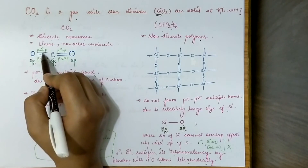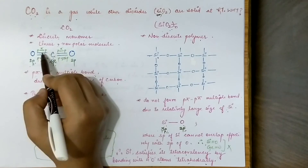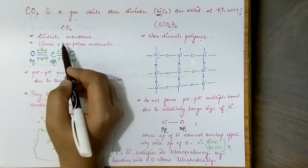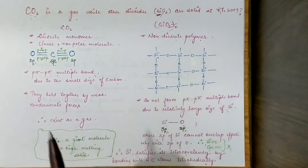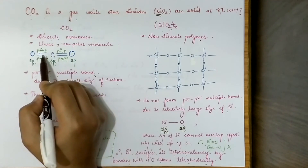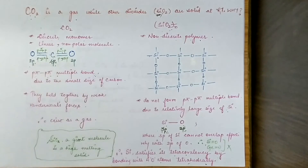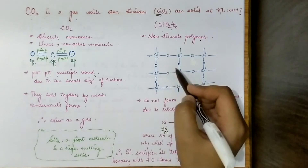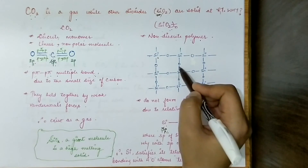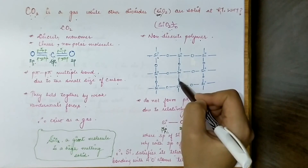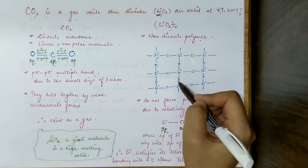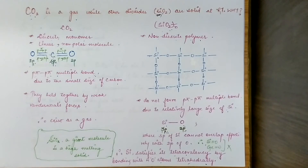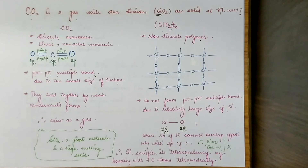Carbon in CO₂ is sp hybridized because it has only 2 sigma bonds — one sigma and one pi on each side — and hybridization always involves only sigma bonds. So 2 sigma bonds gives sp hybridization. For silicon in SiO₂, it is connected to 4 oxygen atoms tetrahedrally, so all 4 bonds are sigma bonds, making silicon sp³ hybridized.